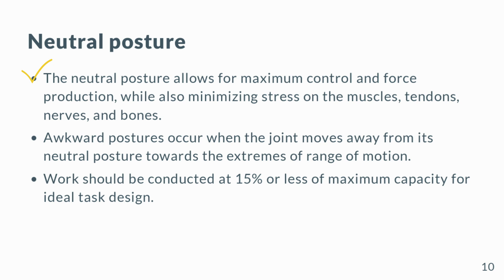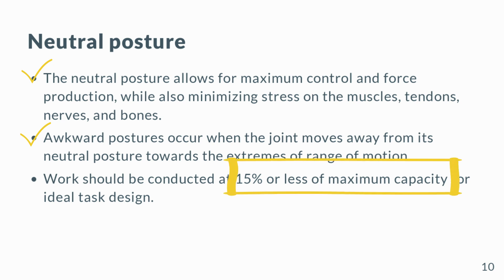The neutral posture allows for maximum control and force production while also minimizing stress on the muscles, tendons, nerves, and bones. A worker's highest force is produced when the joint is in neutral posture. Moving away from neutral posture decreases force as muscle fibers contract or elongate. Bending the wrist causes loss of force due to tendon friction. Awkward postures require more energy to produce the same force. Avoiding awkward postures is important to prevent MSDs and early onset of fatigue. Work should be conducted at 15 percent or less of maximum capacity for ideal task design.